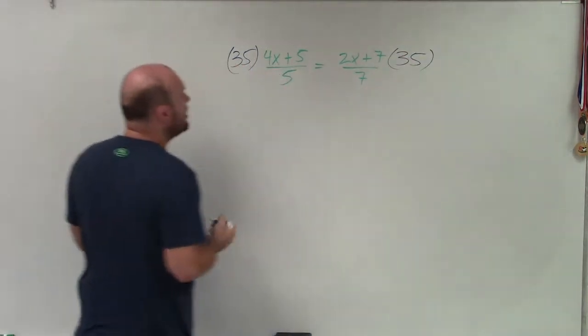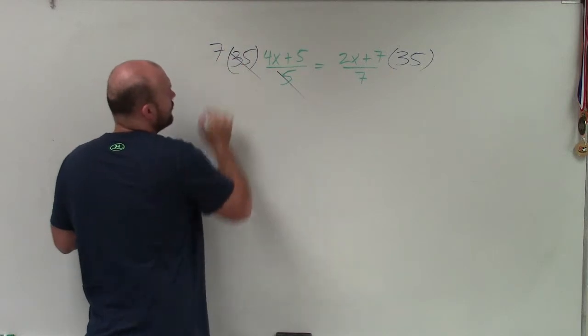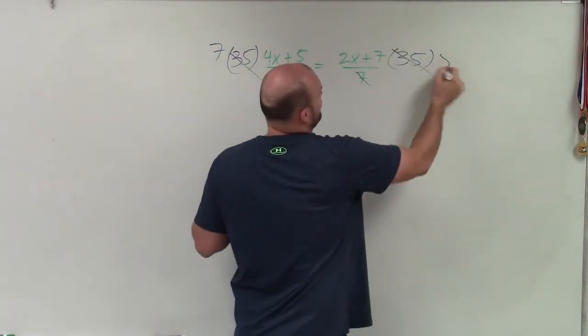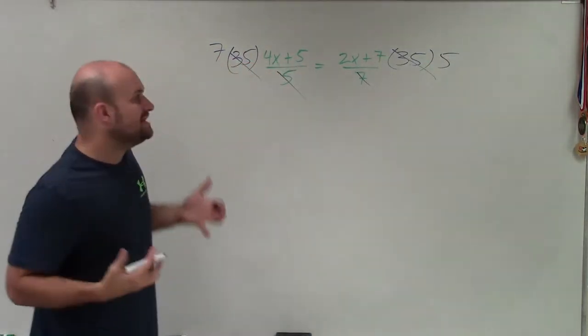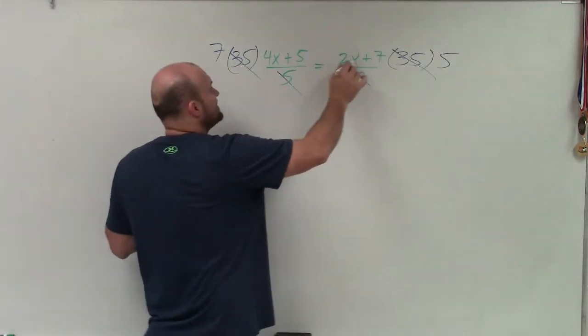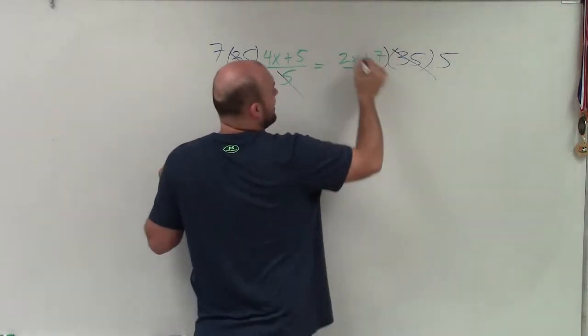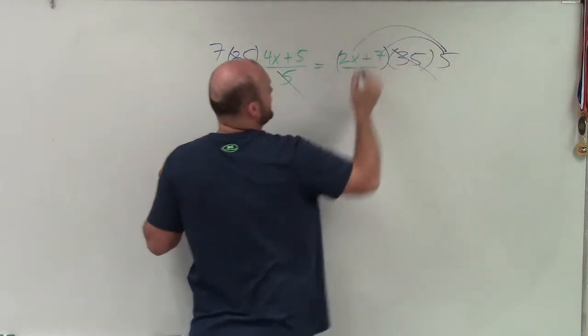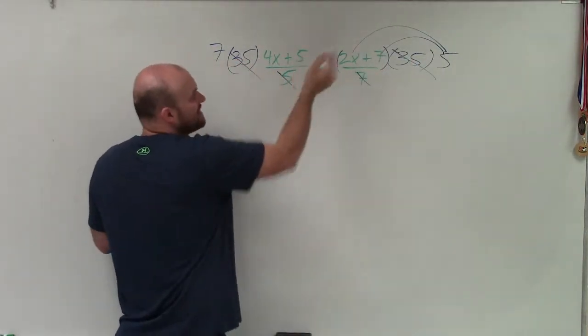And when I multiply by 35 what I get is 7 over 1. And here I get 5 over 1. Which would have been the exact same thing as if I would have circled these, it would have been 5 times 2x plus 7. Now I have 5 times 2x plus 7, right? And 7 times 4x plus 5.